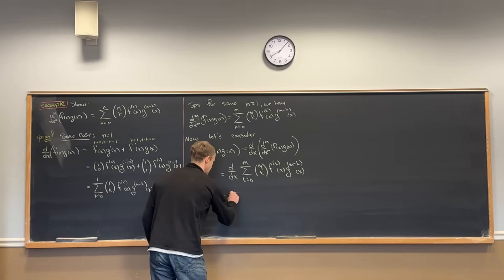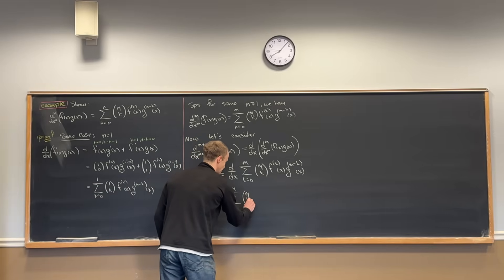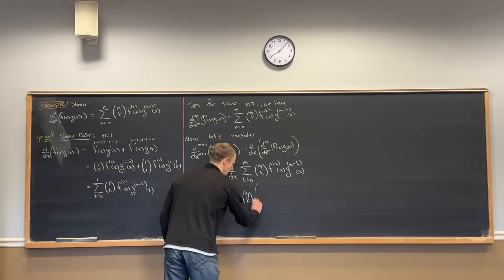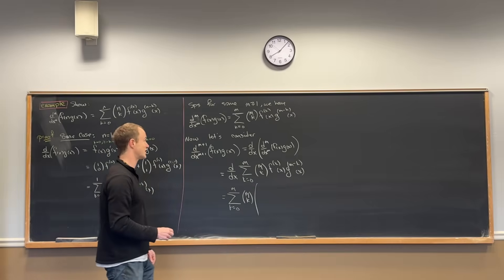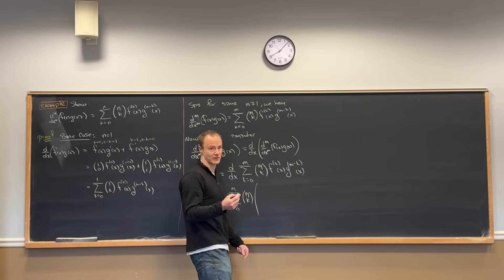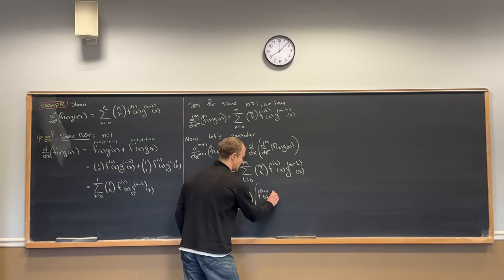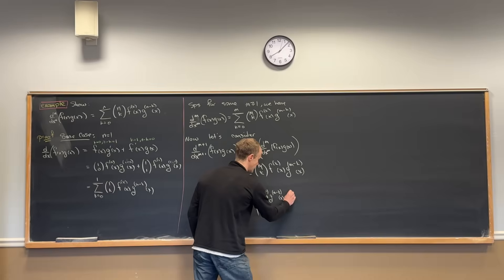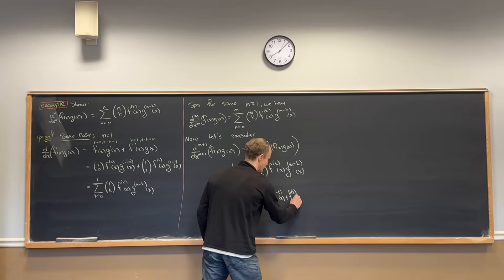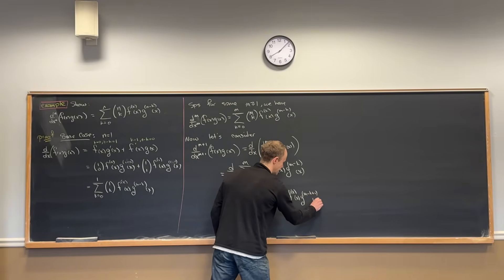That gives us the sum as k goes from 0 to m of m choose k times: the (k+1)st derivative of f times the (m minus k)th derivative of g, plus the kth derivative of f times the (m minus k + 1)st derivative of g.